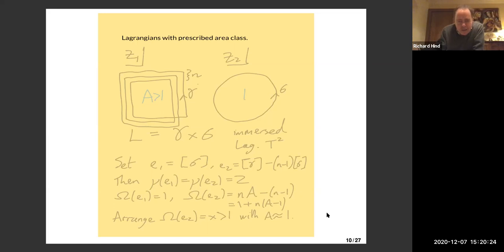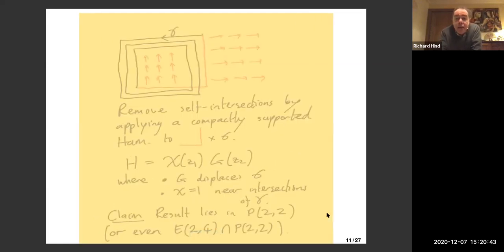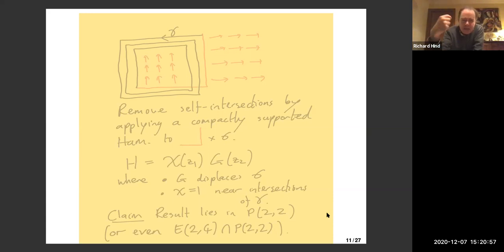We're not talking about immersed Lagrangians though — we have to talk about embedded Lagrangians, because otherwise there's an h-principle. So we need to kill the intersections. All the intersections sit above the part of gamma which is in the bottom right region. The plan is to kill the intersections by applying a compactly supported Hamiltonian to that red bit of gamma × sigma — just move that red bit up in the Z₂ direction to kill all the intersections and produce an embedded Lagrangian.